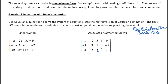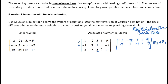I'm going to leave my top row just as it is because I already have a leading one where I want it. If I add row one and row two, this becomes zero — and that's what I want. So row two plus row one: zero, then 3 minus 2 is 1, then 3 plus 1 is 4, and negative 2 plus 9 is 7.